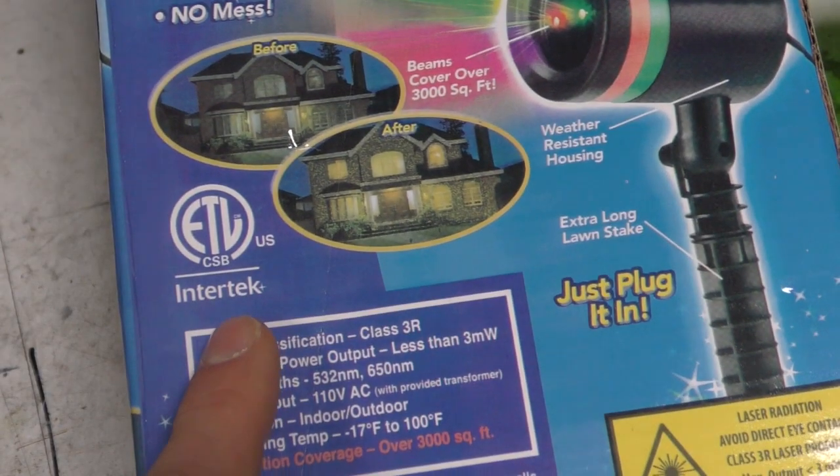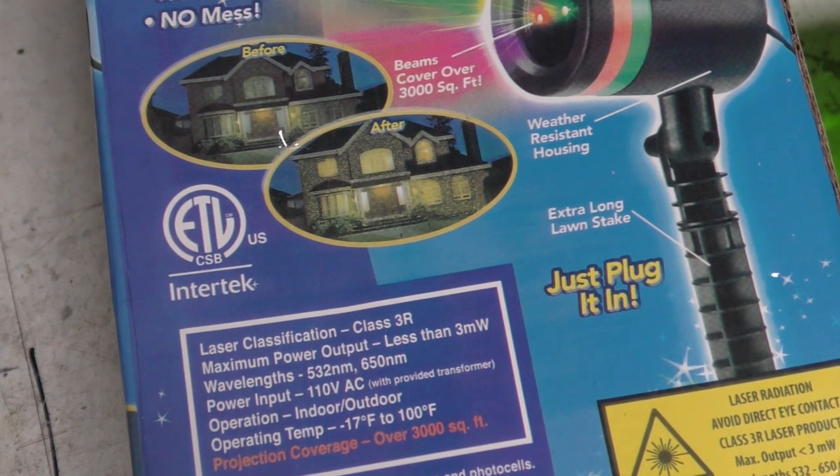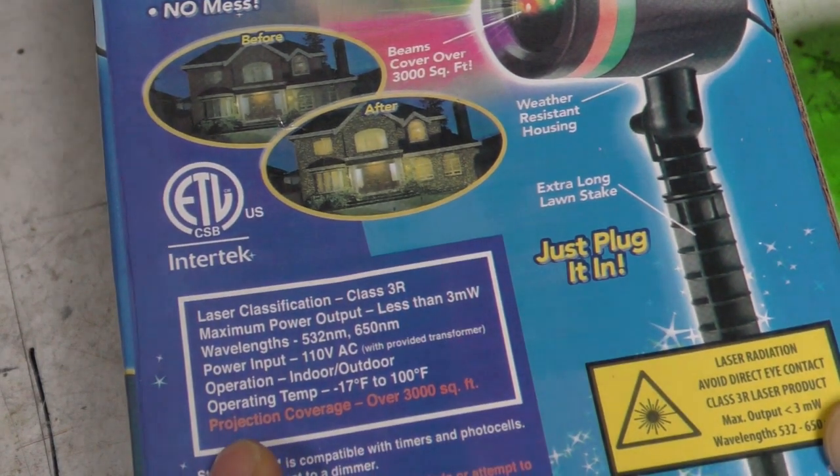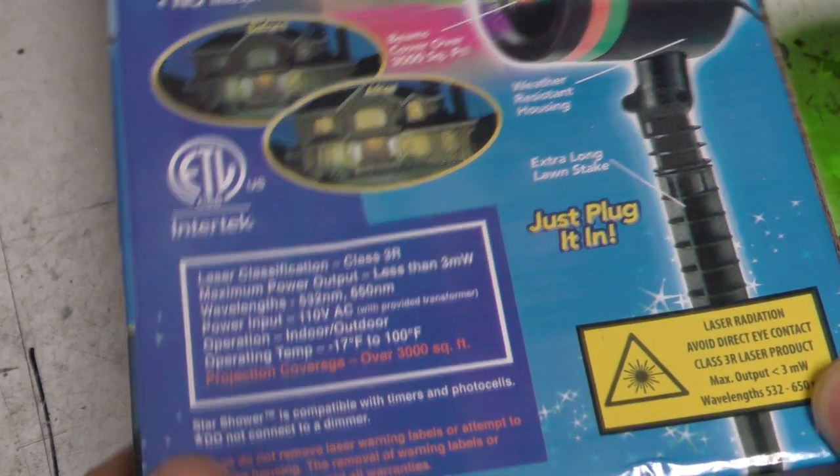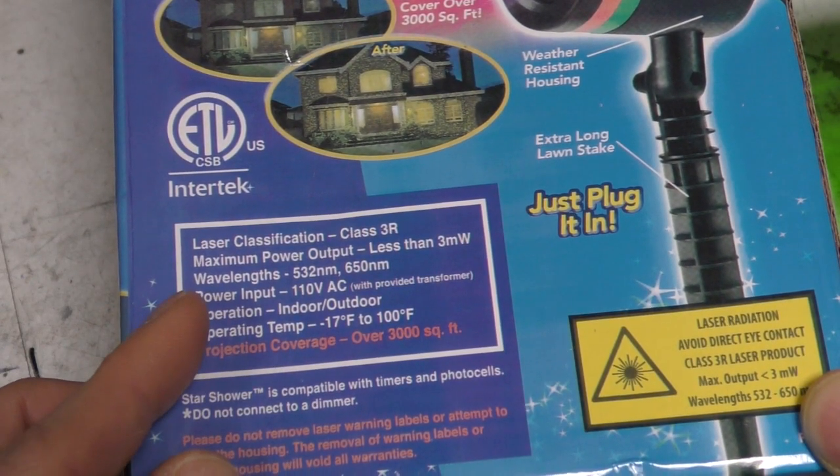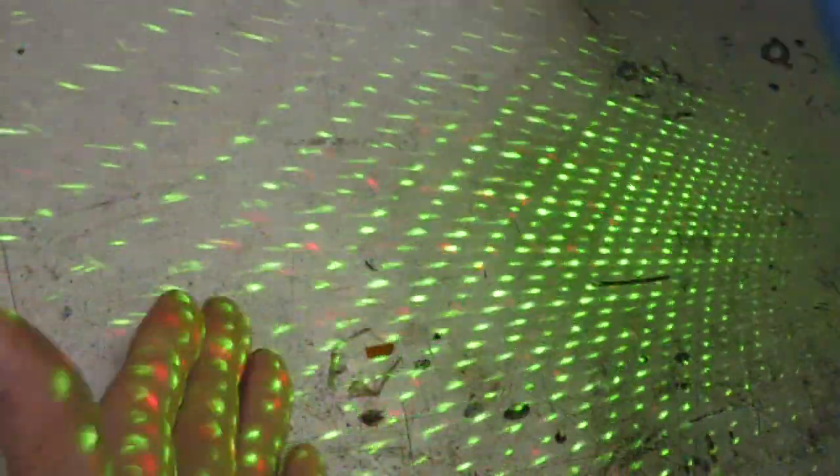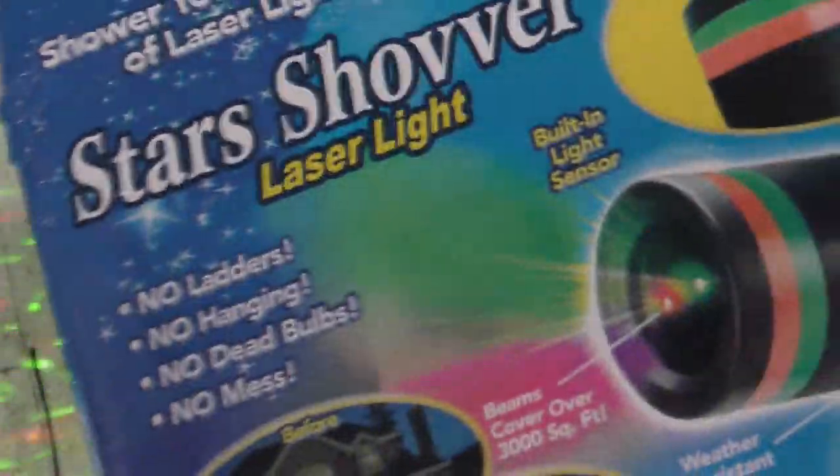ETL Intertek approvals? I don't think so. I haven't even opened this up yet but I can just tell by looking at it that this is going to have minimal safety. Laser classification Class 3R, maximum power output less than 3 milliwatts, 532 and 650 nanometers. Both this one and the one I saw had both green and red, but the red is so dim it's barely noticeable, mainly because the eye has much less sensitivity to red.